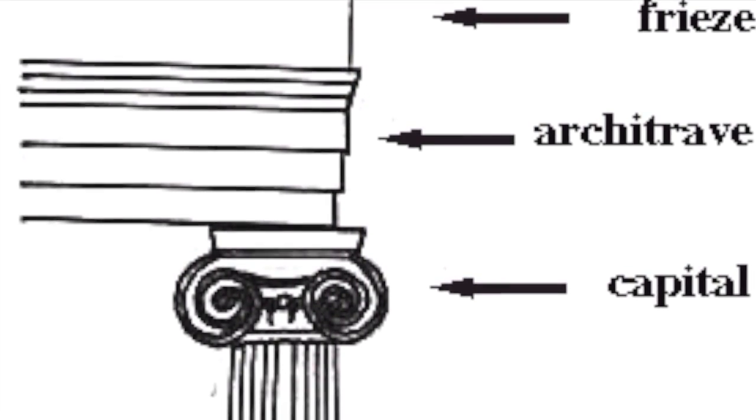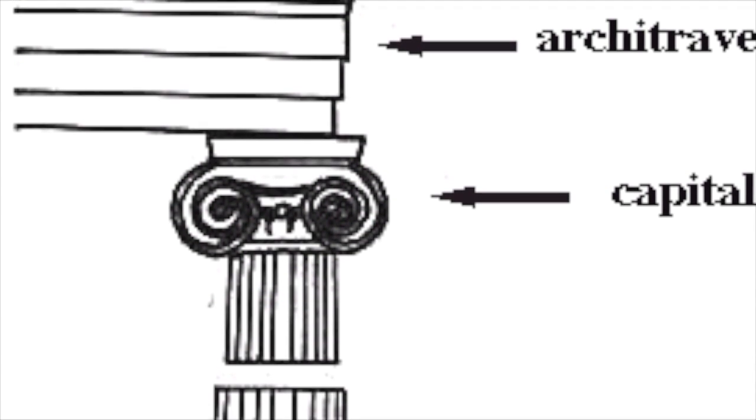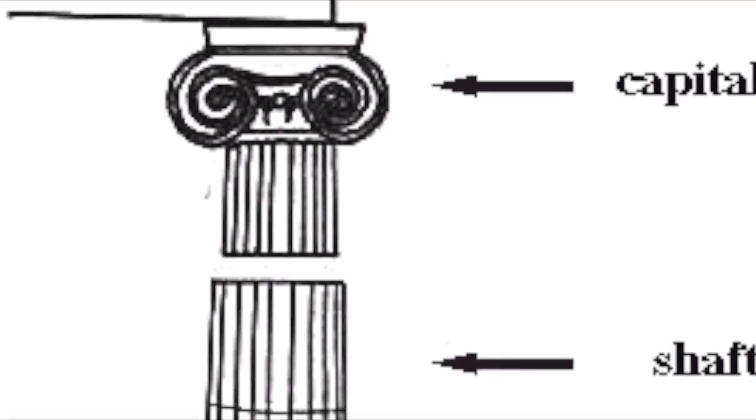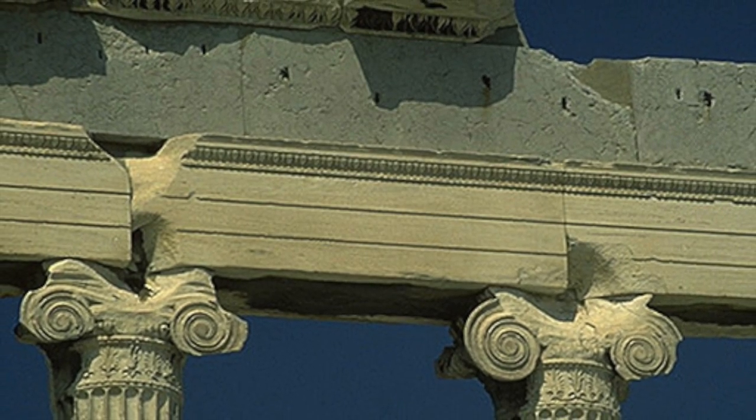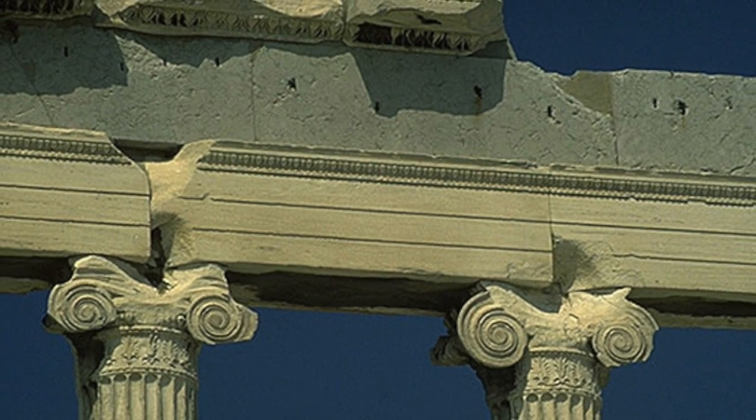The second was the Ionic, which appeared more elegant than the Doric. The Ionic is distinguishable from the Doric by its capital's distinctive scroll-like volutes. The columns also had shafts that are thinner and taller than the Doric. This style was mostly used in eastern Greece and its islands.